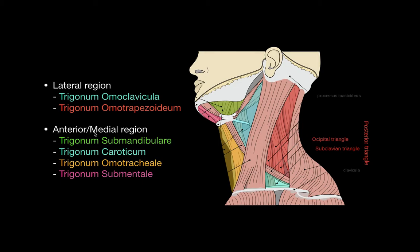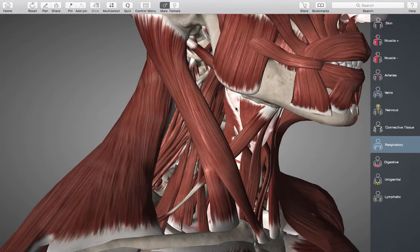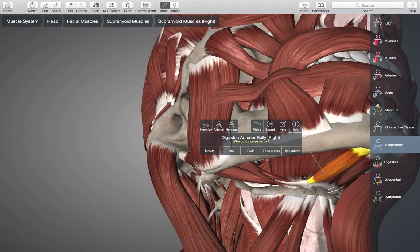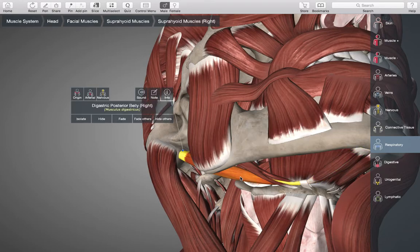Now going over to the anterior or medial region, we can start with the trigonum submandibula. The trigonum submandibula consists of the base of the mandible and then the posterior and anterior belly of musculus digastricus. Going back to our 3D model, here is the anterior belly and posterior belly of musculus digastricus, and our triangle is formed by the base of the mandible.